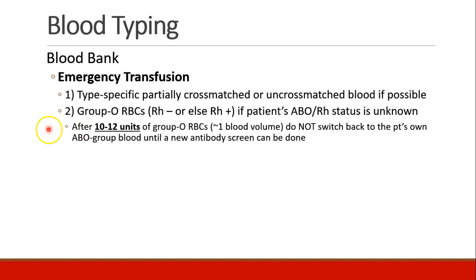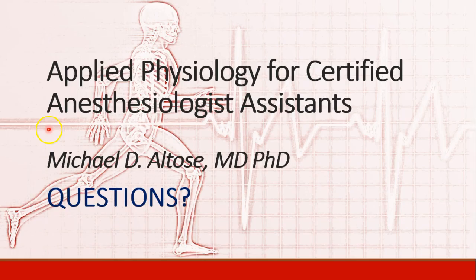Remember that once a patient has gotten about 10 to 12 units of O negative red blood cells — which is one blood volume — we don't consider the patient to be their own blood type anymore. So if you have an AB positive patient who's been getting a lot of O negative blood, after about 10 to 12 units we don't switch back to AB positive. We stick with O negative until we can do a new antibody screen and see the current status of the blood in their vasculature. That's it for our introduction to blood typing. Please let me know if you have questions. Thank you.